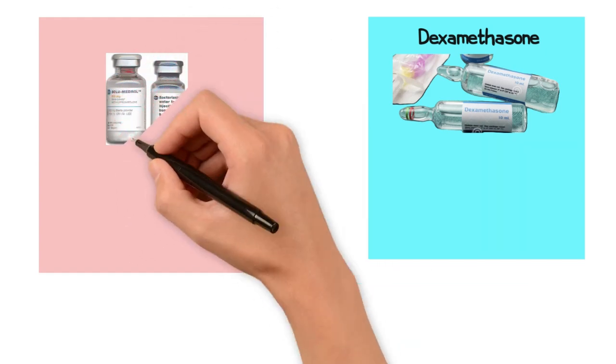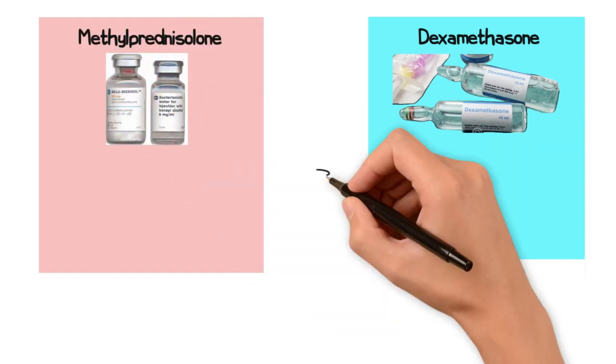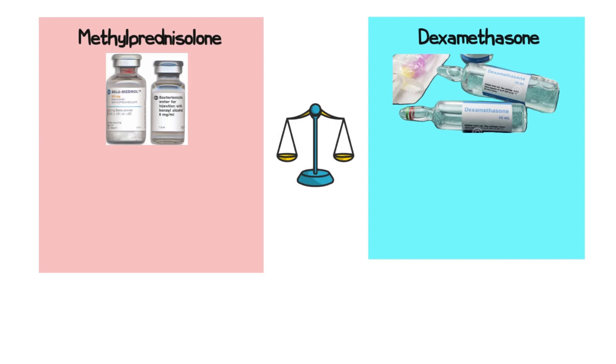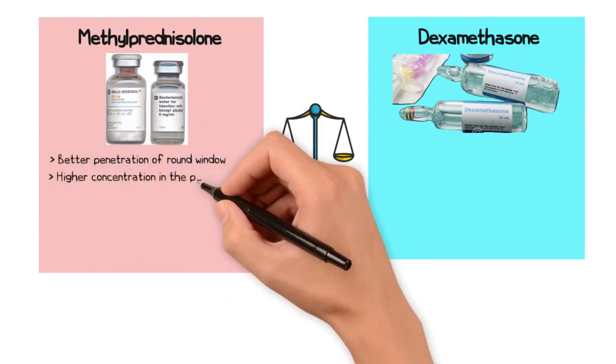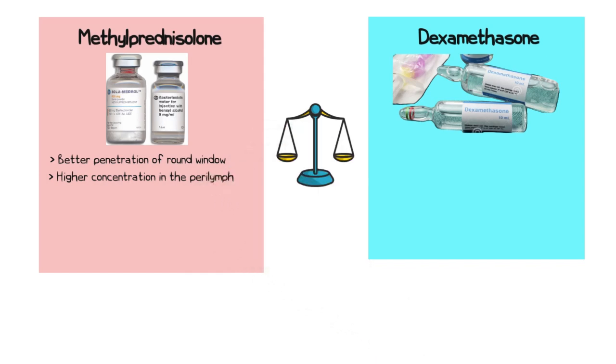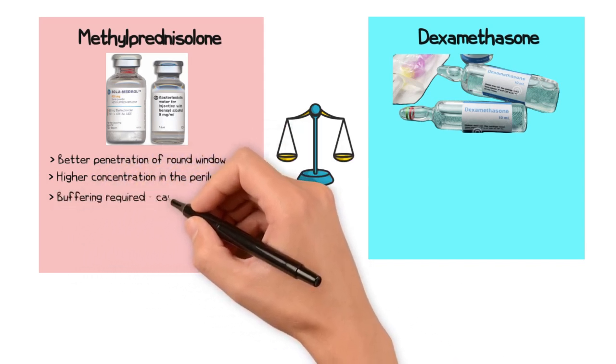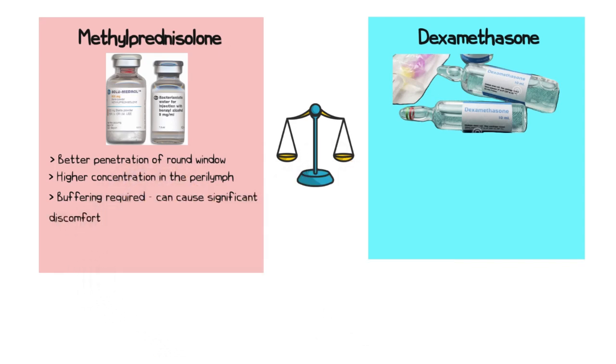Dexamethasone and methylprednisolone are most frequently used. Methylprednisolone has better penetration of the round window and maintains a higher concentration in the perilymph compared to dexamethasone. However, it must be buffered, and the buffering solution tends to cause significant discomfort. In contrast, dexamethasone causes less discomfort but has less bioavailability within the perilymph.